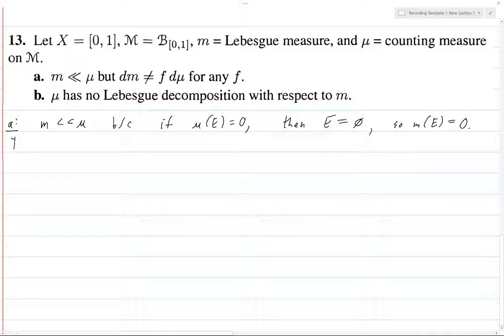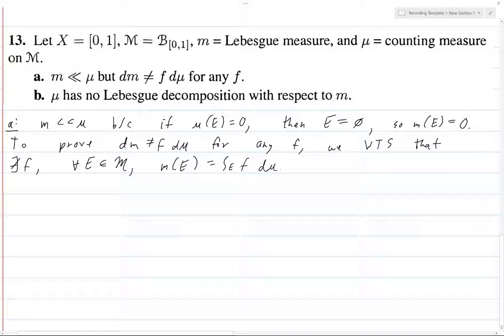And so M of E equals 0 because measure of the empty set is always 0. So now to prove dm is not equal to f dmu for any f, what does this mean? We want to show that there does not exist an f such that for all E in script M, the Lebesgue measure of E is equal to the integral over E of f integrated with respect to the counting measure.